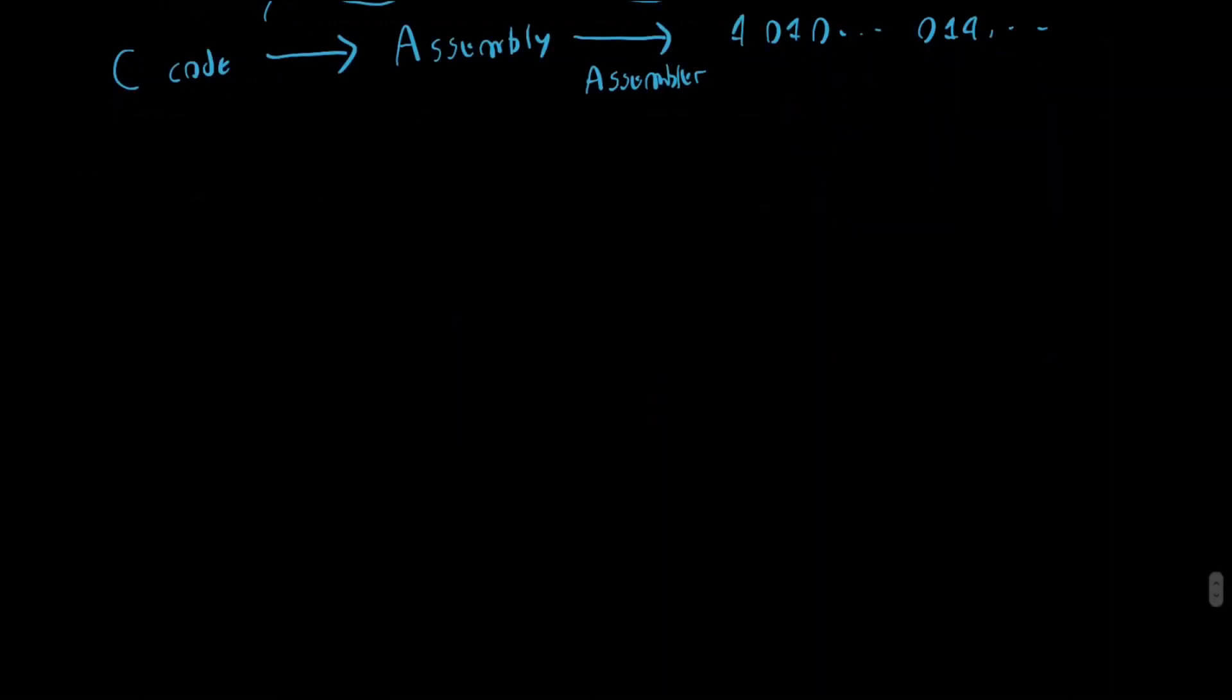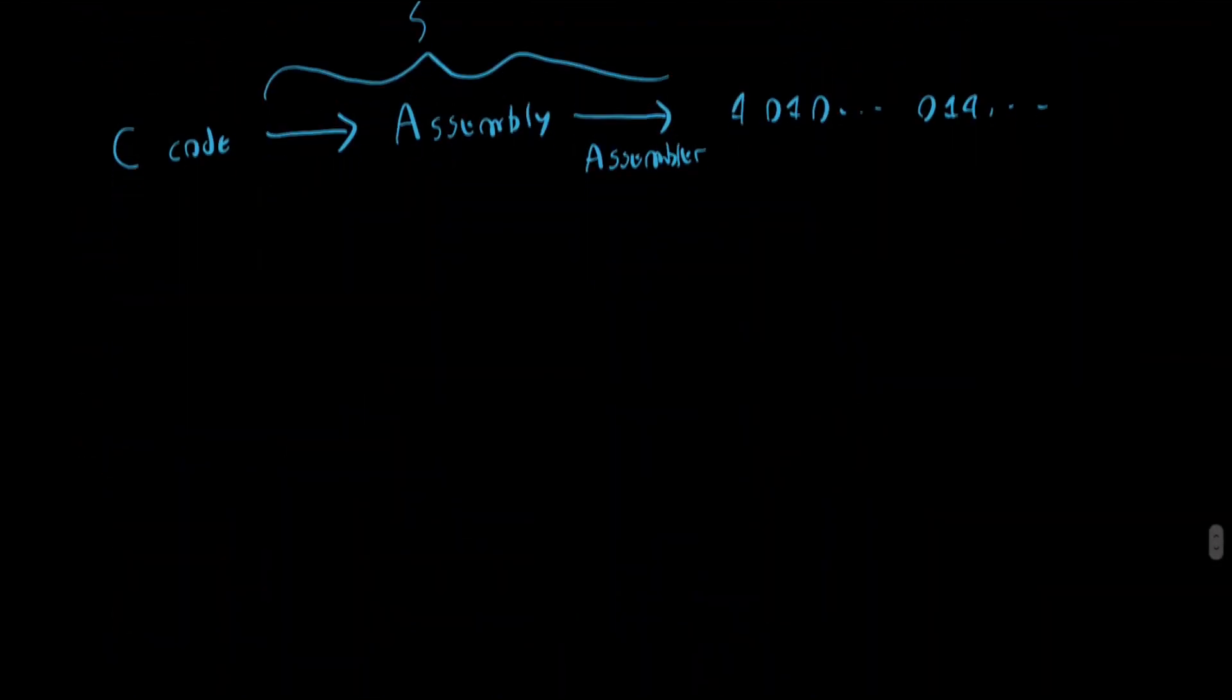So now that we've talked about this, we now a little bit understand where assembly stands in the, we could say, in this kind of hierarchy of languages. Assembly is just one level of abstraction above the machine code that our machine understands. And abstraction is really the key word here, and it's actually one of the most important concepts of computer science.